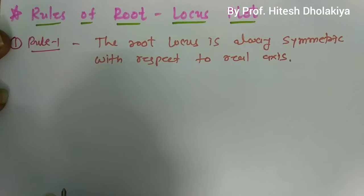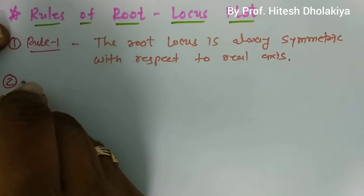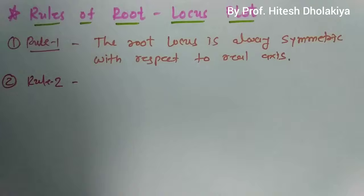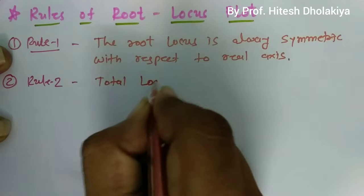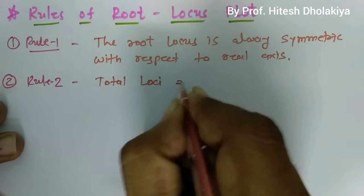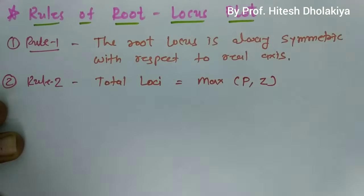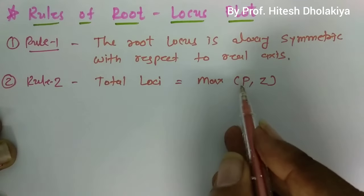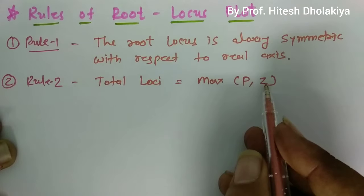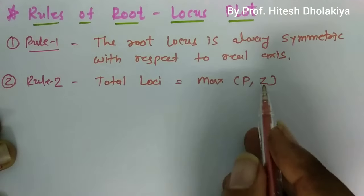The second rule is to identify the number of loci. The total number of loci equals the maximum of the number of poles and zeros in the transfer function. So if a system has P number of poles and Z number of zeros, the total loci in the root locus plot will be the maximum of P or Z.